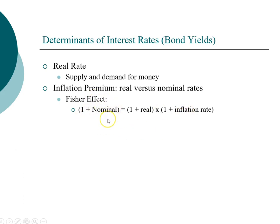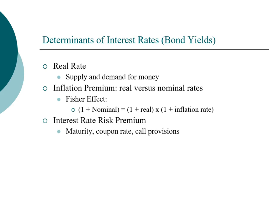The Fisher effect describes the relationship between nominal rate, real interest rate, and inflation rate. The nominal rate is what you typically find in any interest quotation — with the exception of TIPS. So if you see an APR reported by a credit card company or a CD return at a bank, those are nominal rates. In addition to the inflation premium, investors may also demand an interest rate risk premium. Factors such as longer maturity, lower coupon, or a call provision increase interest rate risk and therefore carry a higher interest rate risk premium.